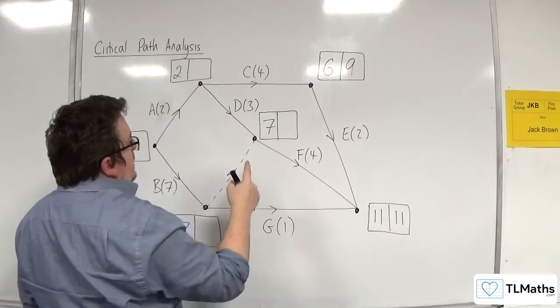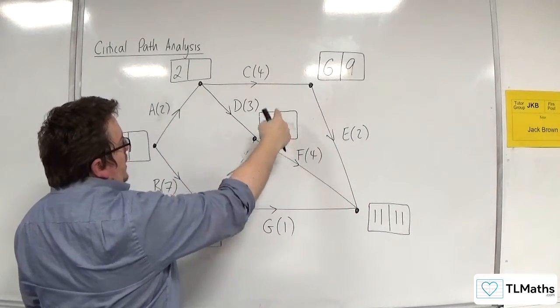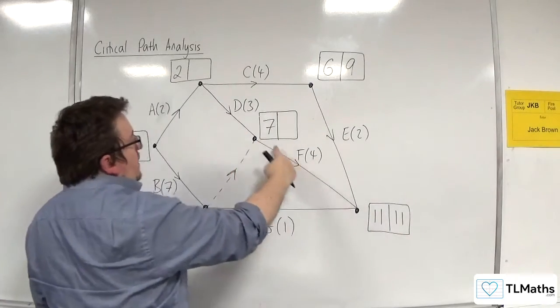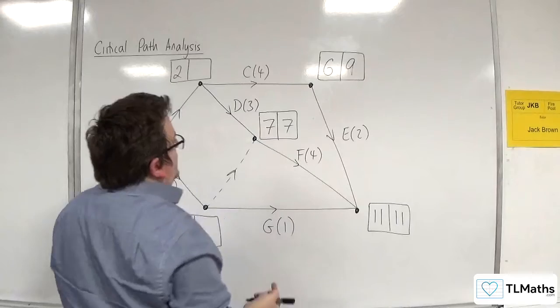Now let's go with, can I do this box? I can do this box. Let's do this box. 11 take away four is seven. So that will go there. Because that's the only route back into that box.